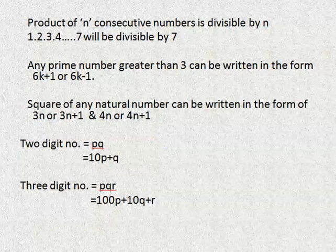can be written as 6k minus 1 where k is 1, so 6 minus 1 will give 5. Square of any natural number can be written in the form of 3n or 3n plus 1 and 4n or 4n plus 1. For example,